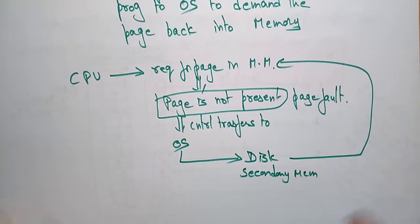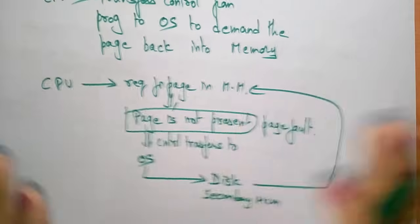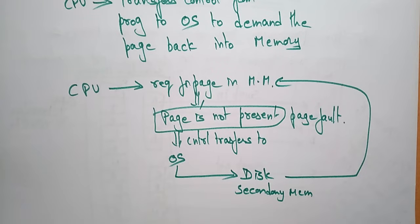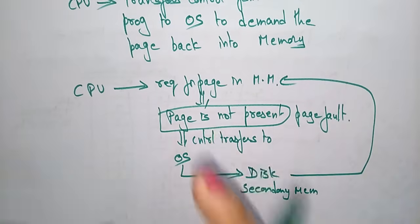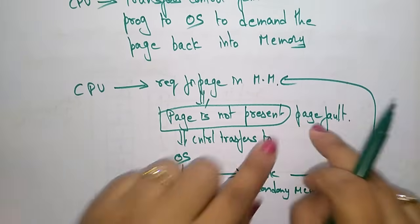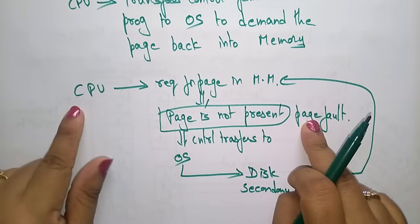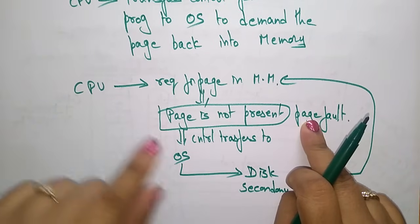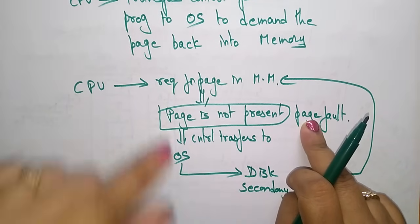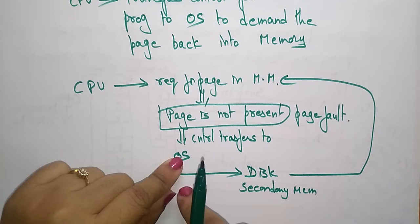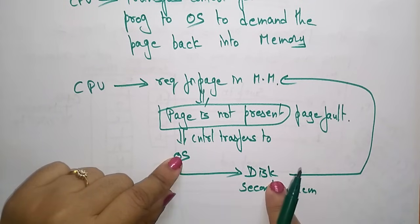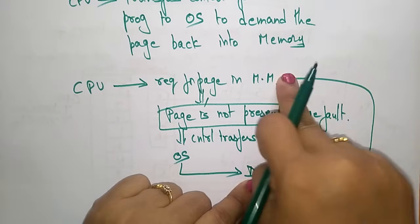This is the concept of page fault. In demand paging, whatever page the CPU is demanding — if that page is not present in the main memory — that is called a page fault. To overcome this page fault, the CPU transfers control from the program to the operating system, and then the operating system demands the page back from disk to main memory.